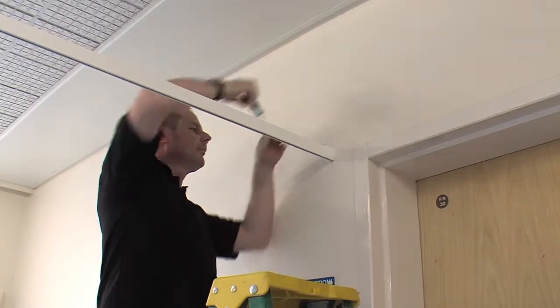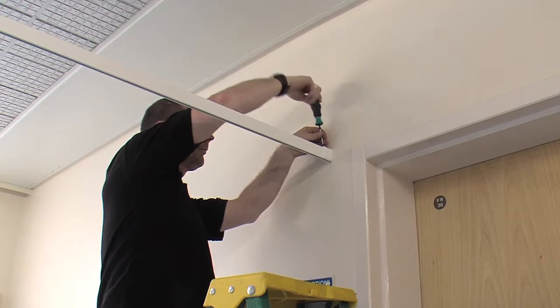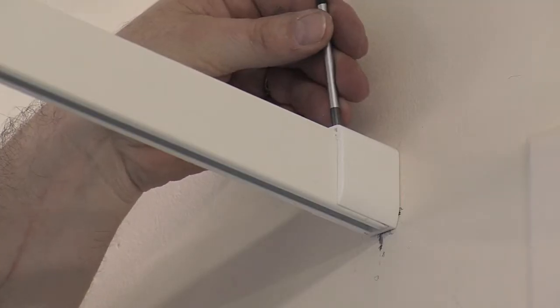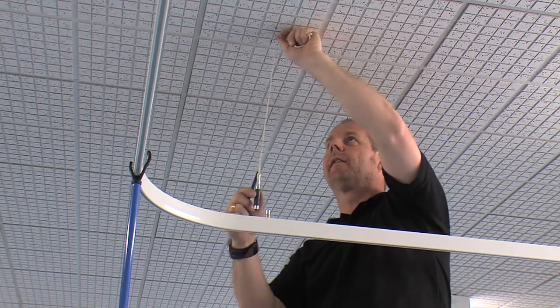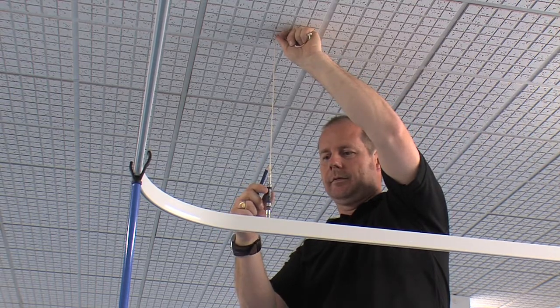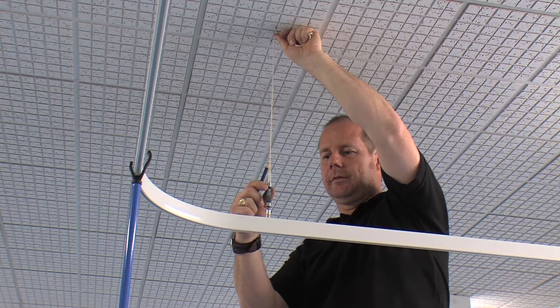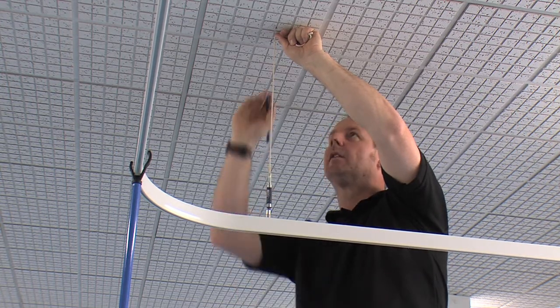The fixing screws need to be firmly tightened at this point, and then a quick visual inspection to make sure that the thing is level before the vertical support is measured and installed. A plumb line is used to identify the exact spot on the ceiling where the drilling will take place.